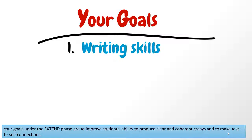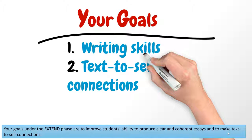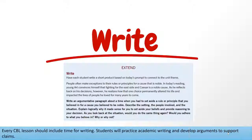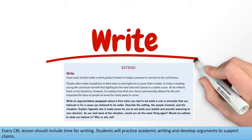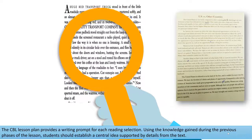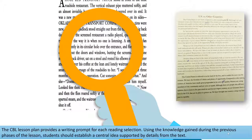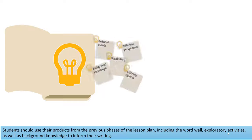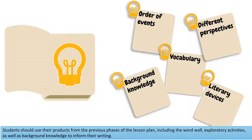Your goals under the extend phase are to improve students' ability to produce clear and coherent essays and to make text-to-self connections. Every CBL lesson should include time for writing. Students will practice academic writing and develop arguments to support claims. The CBL lesson plan provides a writing prompt for each reading selection. Using knowledge gained during the previous phases, students should establish a central idea supported by details from the text, drawing on the word wall, exploratory activities, and background knowledge.